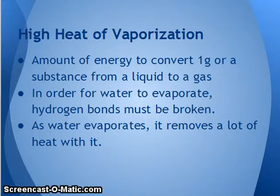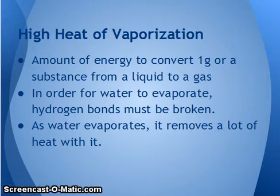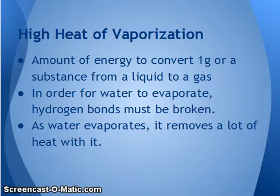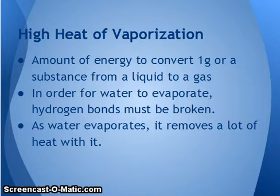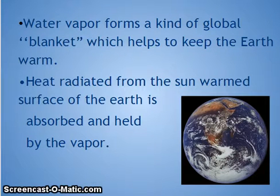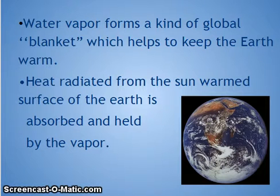Another property is the high heat of vaporization, which is related to high specific heat. It's the amount of energy needed to convert one gram of a substance from a liquid to a gas. In order for water to evaporate, hydrogen bonds must be broken — those bonds between hydrogens and oxygens that give water its cohesion. As water evaporates it removes a lot of heat with it. Water vapor forms a kind of global blanket which helps keep the earth warm — water vapor is actually a greenhouse gas that absorbs and holds heat radiated from the sun.